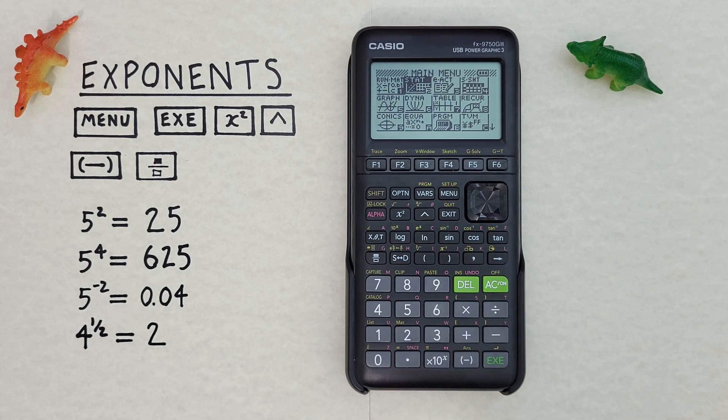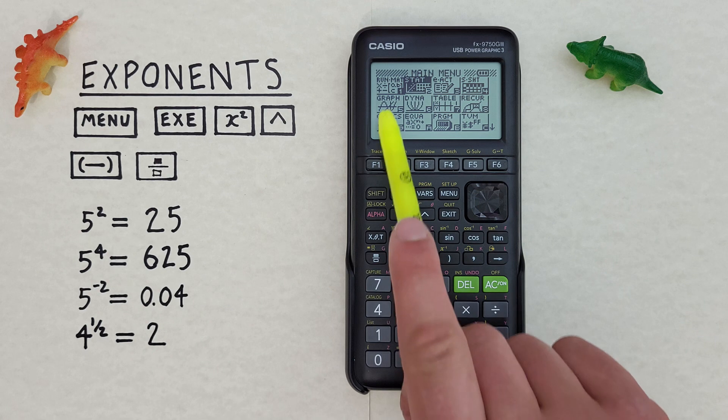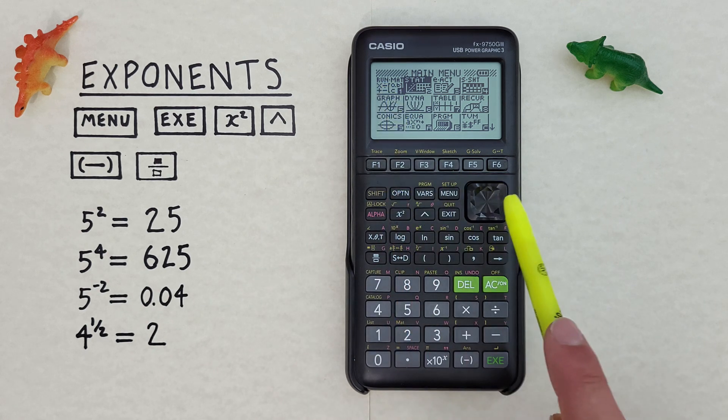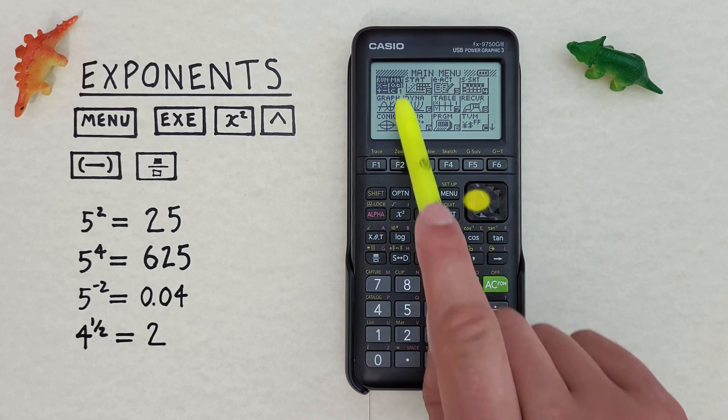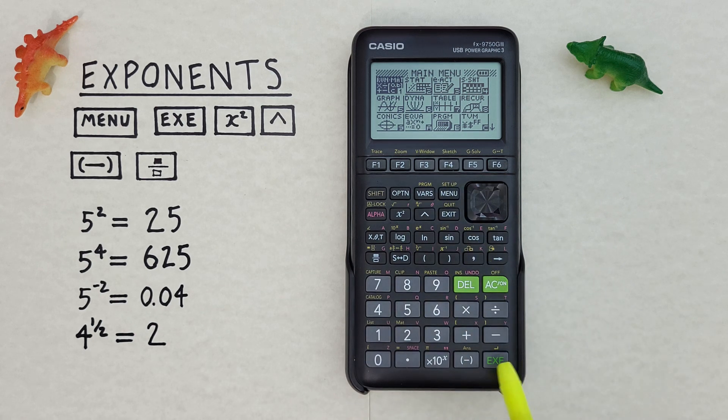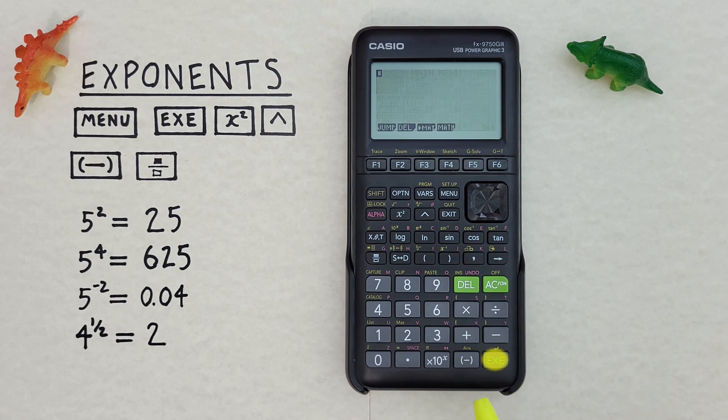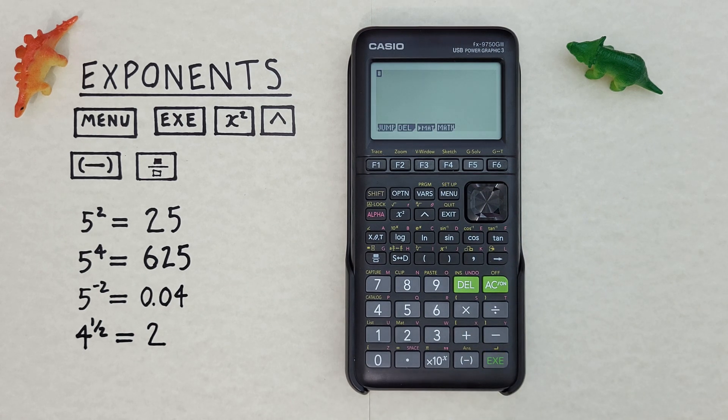Now to use exponents, we want to use the run mode. That's this one here. So we can scroll over, highlight that, and then press the exe key. Now we can use our exponents.